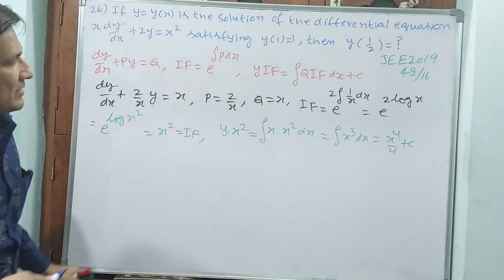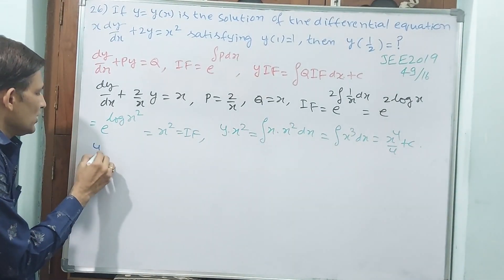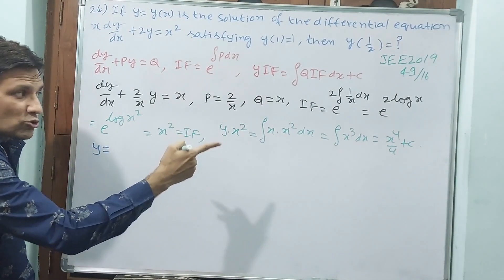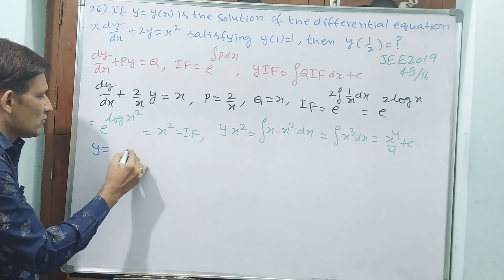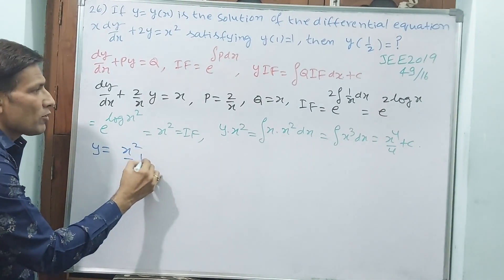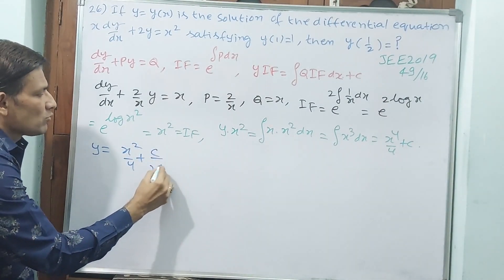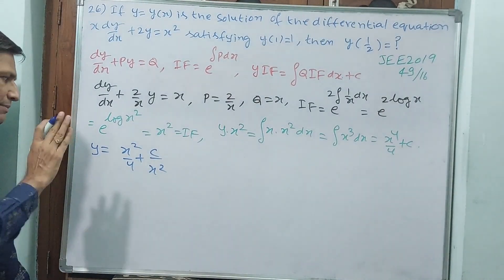But y is required. We send x square also. y equals x to the power of 4 divided by x square is x square. x square by 4 plus c by x square. This is not the final formula though.